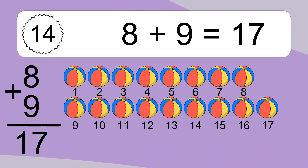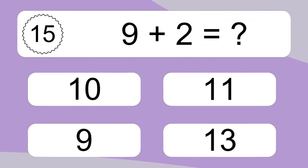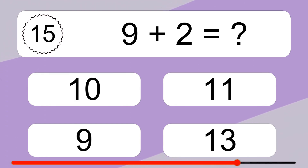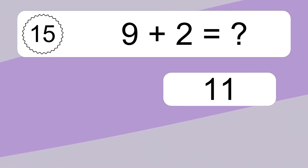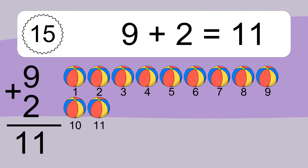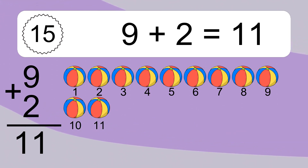9 plus 2 equals what? 9 plus 2 equals 11. Let's count it: 1, 2, 3, 4, 5, 6, 7, 8, 9, 10, 11.